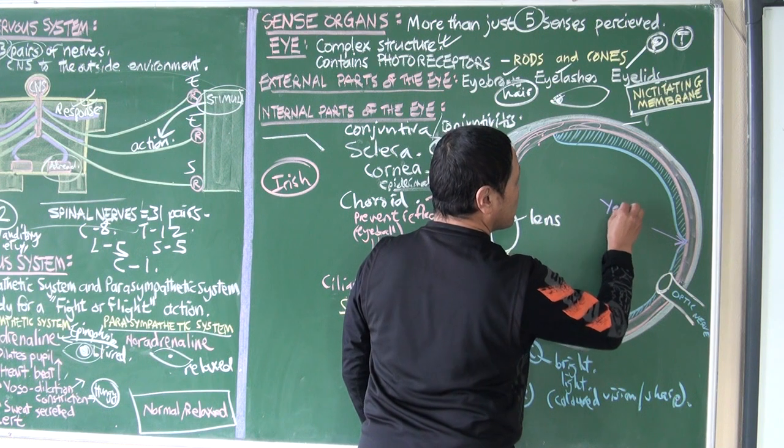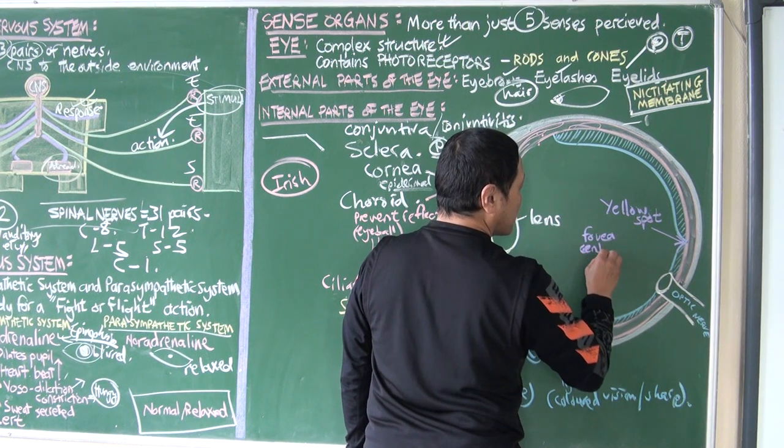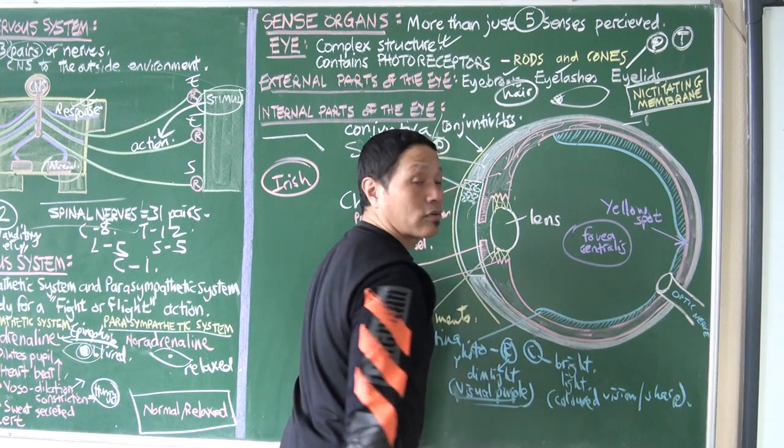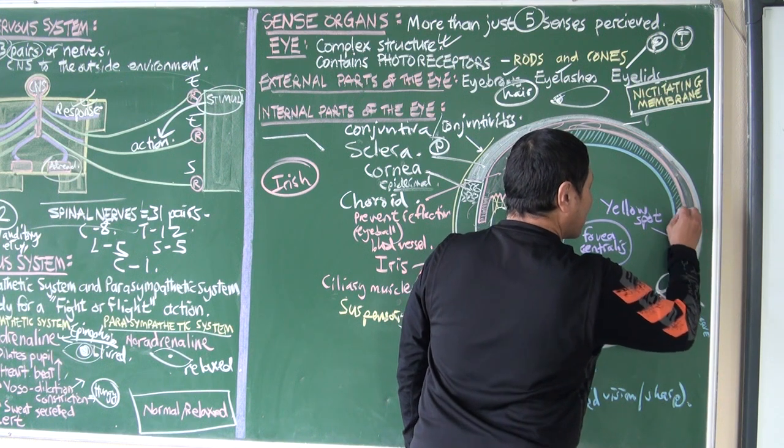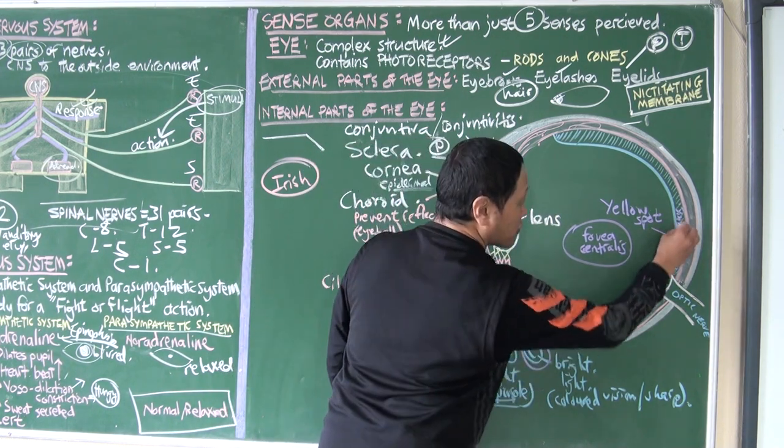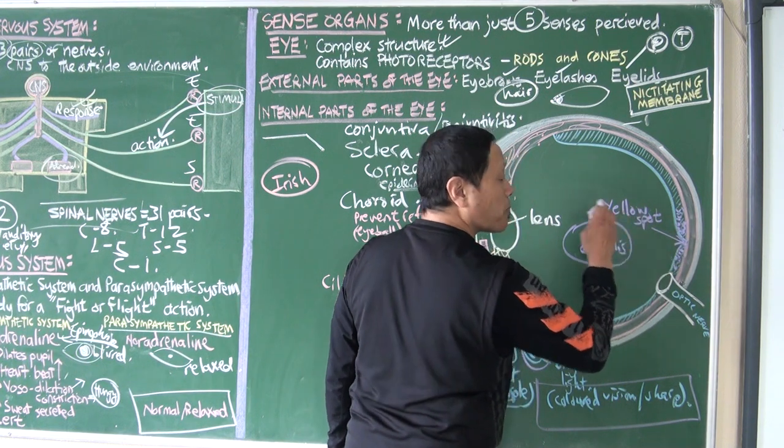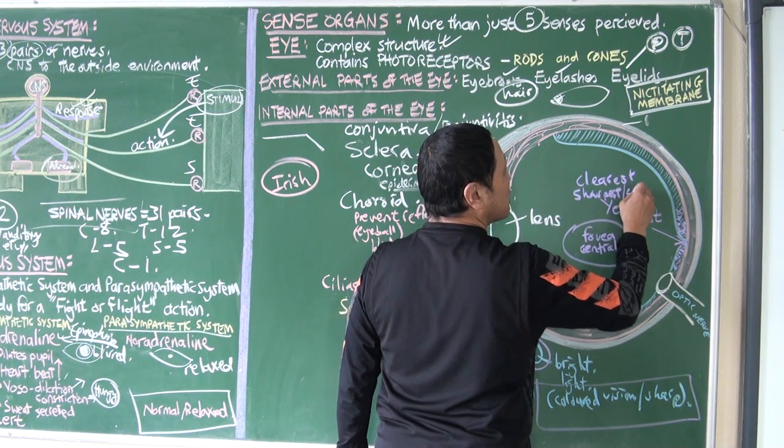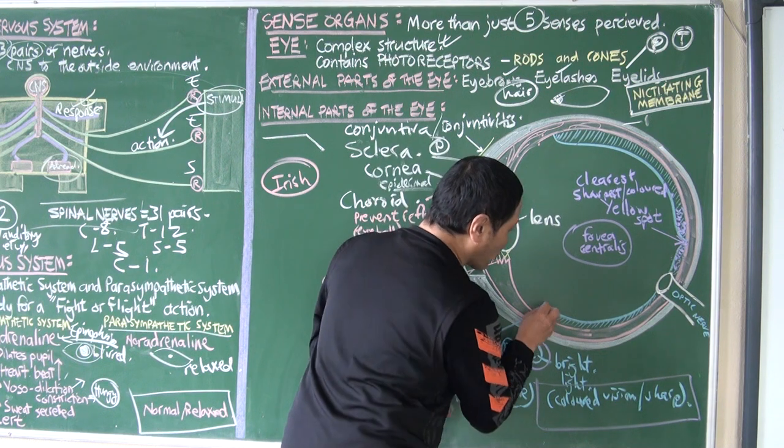On the retina we've got two structures, very important structures. This depression is called the yellow spot, also known as the fovea centralis. The importance of it is this is the place where there is a high concentration of cones. If we're talking about cone cells and high concentration of cone cells, then we're talking about colored vision. So this is the place - yellow spot is the place of the clearest, sharpest colored vision.